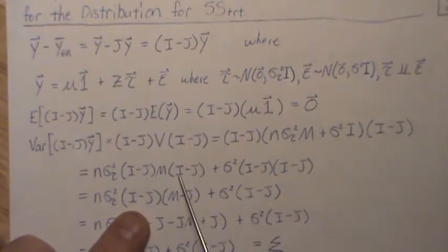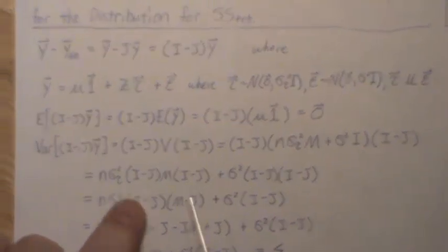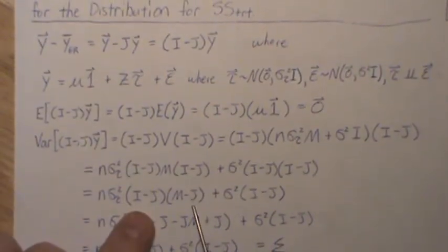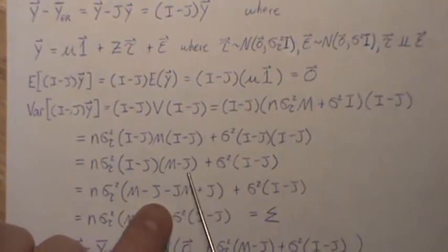Now if we take M times I, we get M, and M times J, we get J. So that's how we go from here to here. This is idempotent, so we just get it back when we multiply. Now we do this math here, so IM is M, and IJ is J, and JM is JM, and JJ is J.